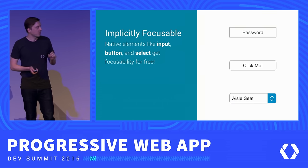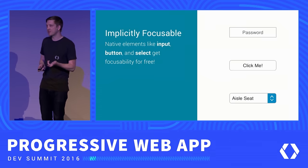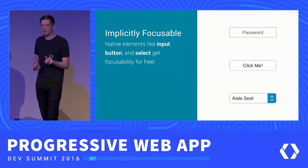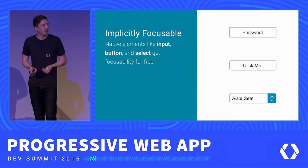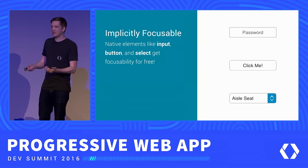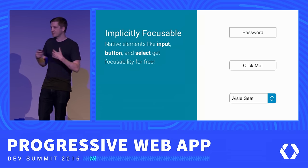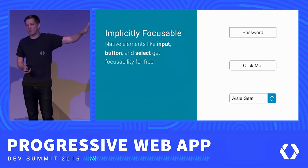Many controls you're familiar with — button, input, select — are implicitly focusable, meaning they're naturally inserted into the tab order so a user can reach them using Tab or Shift-Tab. They also have built-in keyboard behavior support. For example, a select element responds to up and down arrow keys and Space or Enter. But not all elements are focusable — a header, a paragraph of text, an image of a cat — these are not focusable because there's generally no need to focus something a user can't interact with.